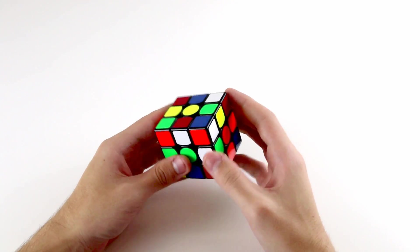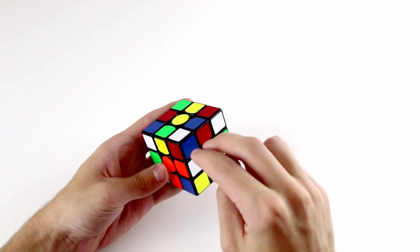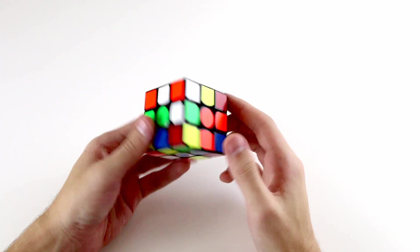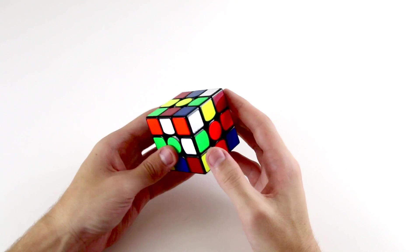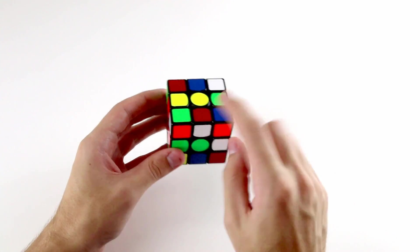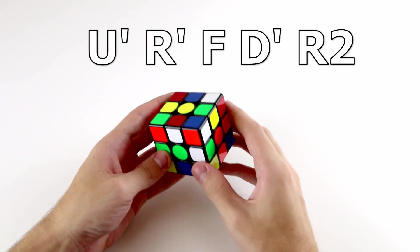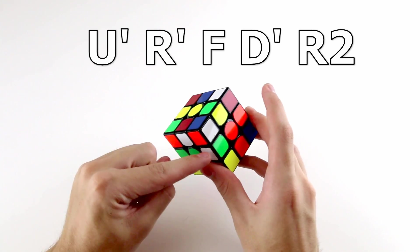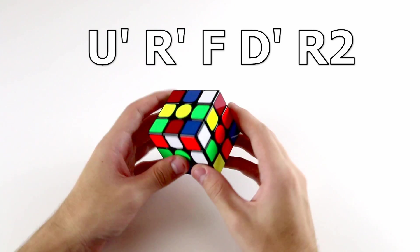When you're trying to track a first pair, it's useful to lean towards pieces, for example these two, that are actually connected together and will move around together as you solve your cross. So for example, this cross solution is U' R' F D' R2, because this edge is here, this one's here, and this one's here, and the other last one is over here.